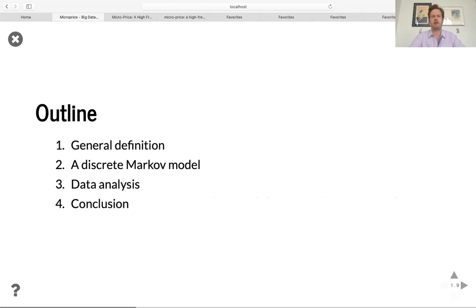So here's the general outline. First, I'll define the micro price. Then I'll give you a simple Markov model that captures most of the dynamics and I'll show you some data analysis on bank of America and Chevron and hope that you'll be able to do the same on other datasets.